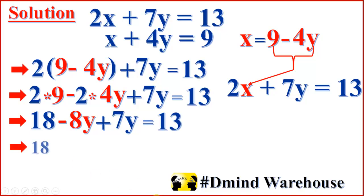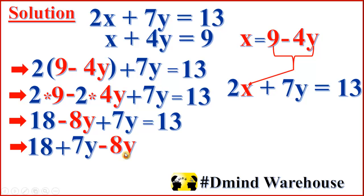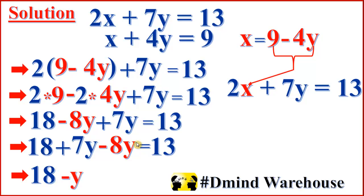Now we have to rearrange this expression. That means 18 plus 7y minus 8y equal to 13, which gives us 18 plus negative y equal to 13.